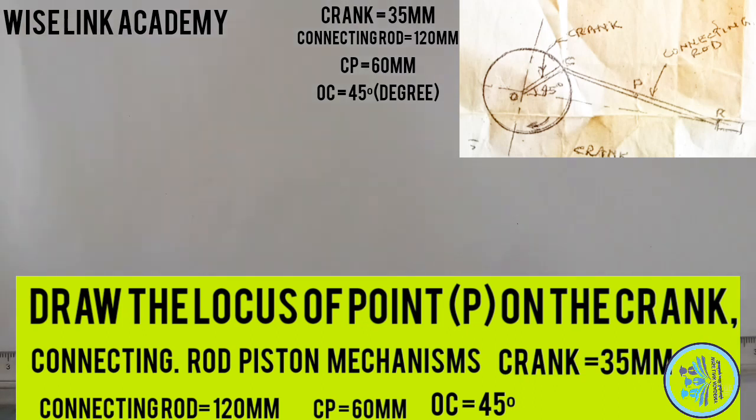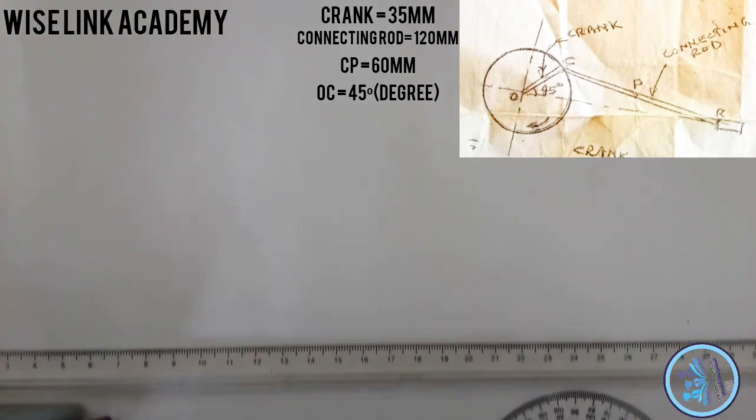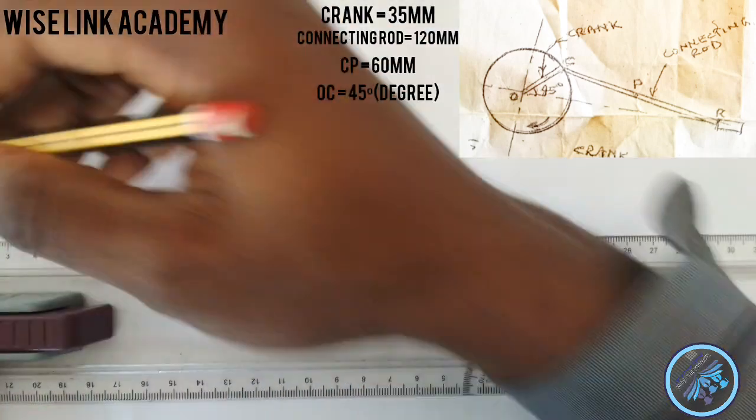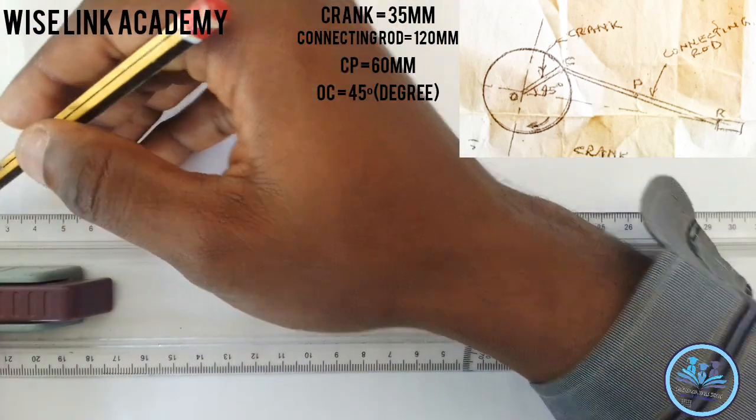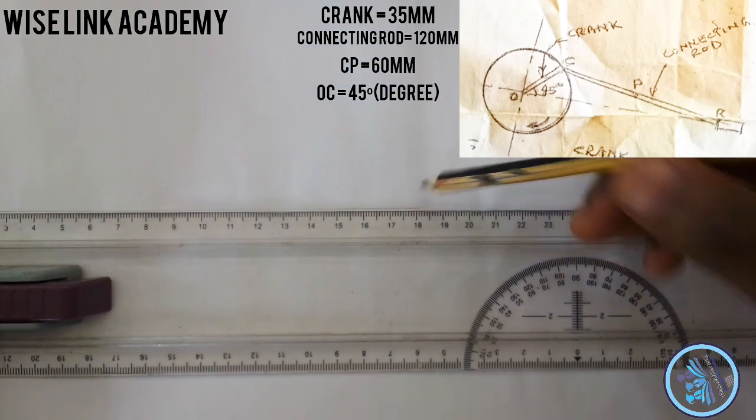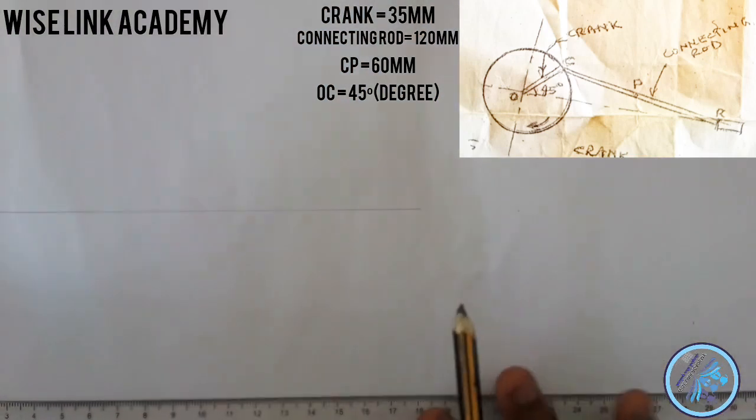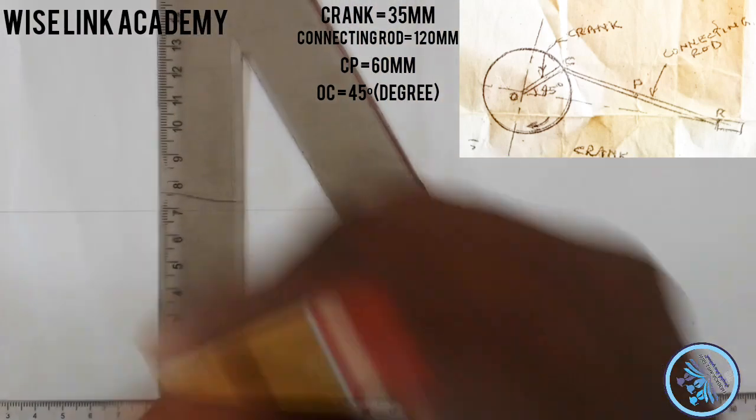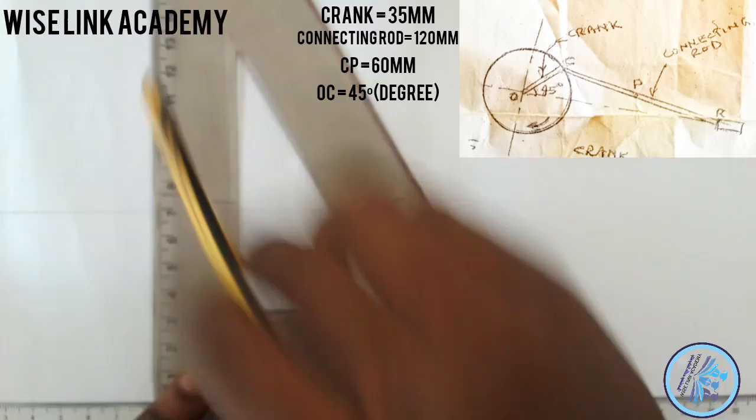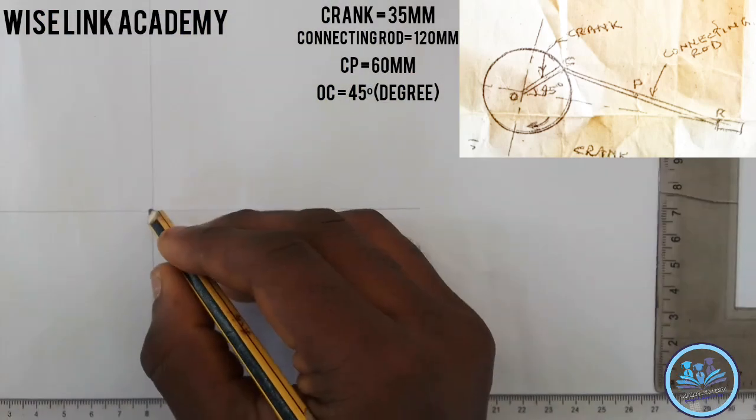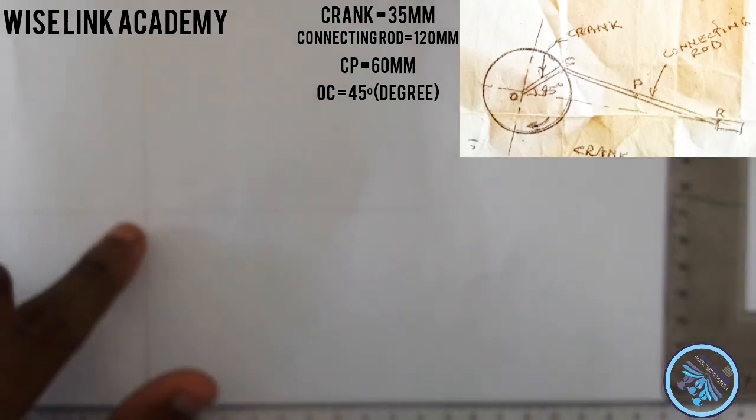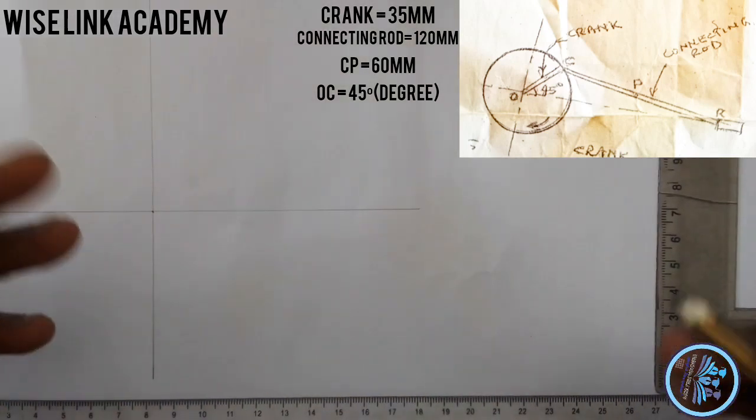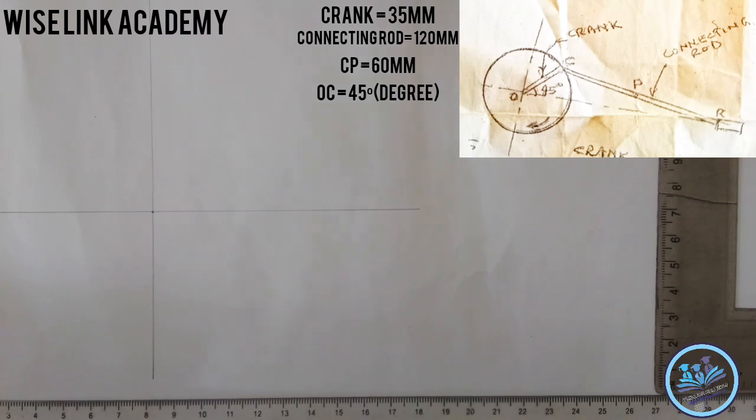The first thing I will do is draw my horizontal and vertical line to have a reasonable center point. I will take my T square this way, draw my horizontal line, then draw my vertical line upward. This is my center point. I will use it to start my establishment of my crank.